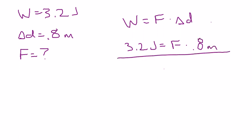So we're looking here for force. Work equals force times distance. 3.2 joules equals force times 0.8 meters. Divide by 0.8 meters. And we should get 4 newtons equals the force.